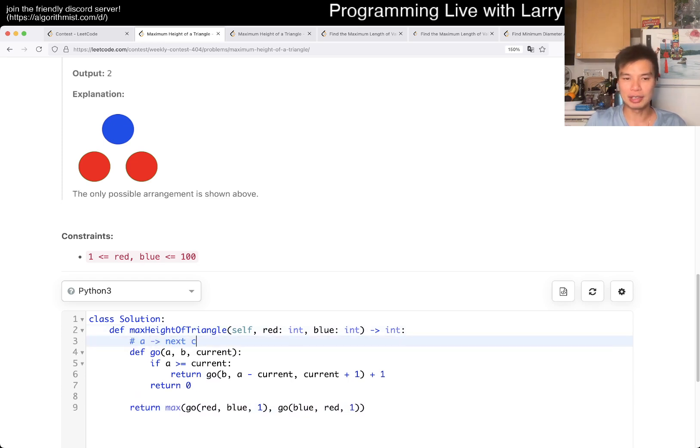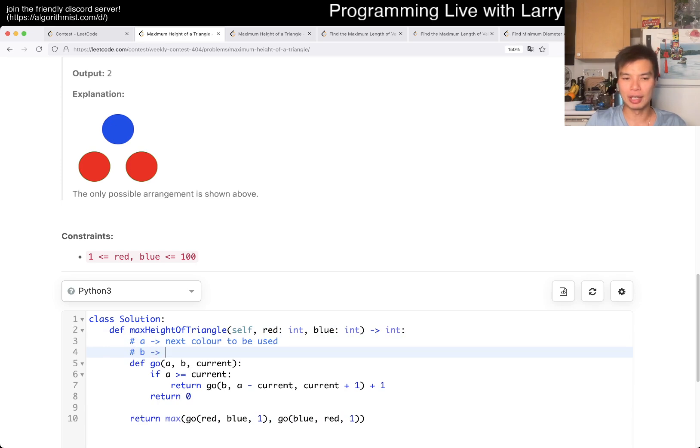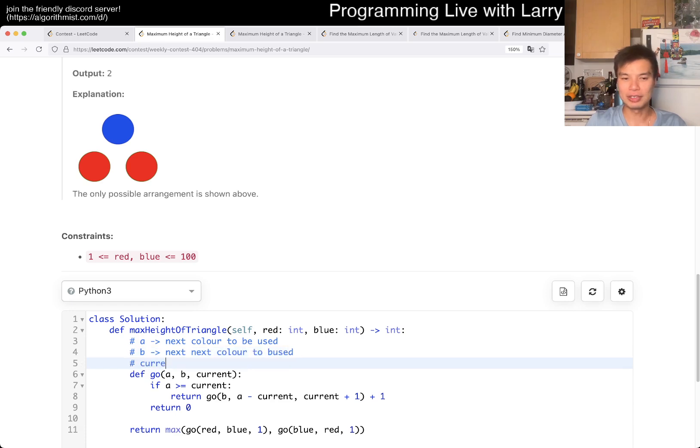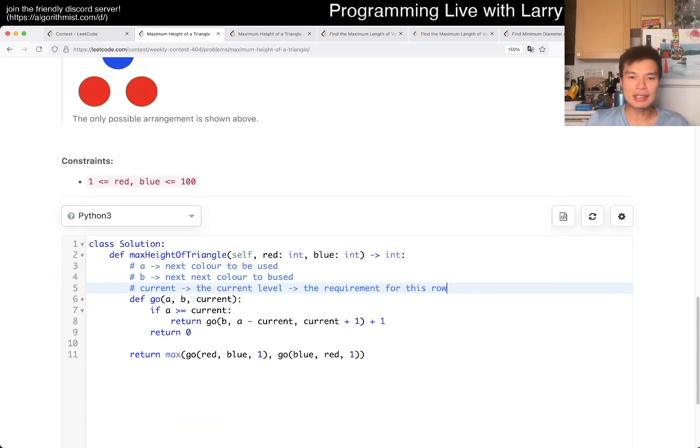And basically, this is the idea that I have: assume that A is going to be the next color that we use. B is the second color and current is the level. Then this is basically the recurrence, right? And you just do it for both colors going first.